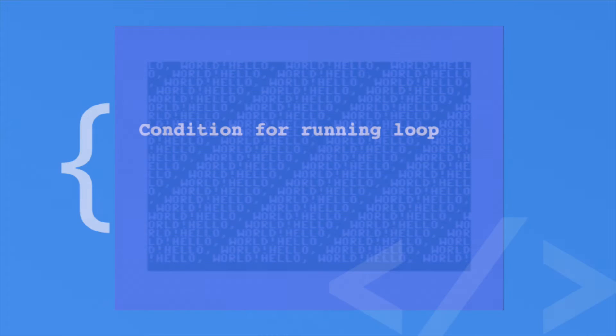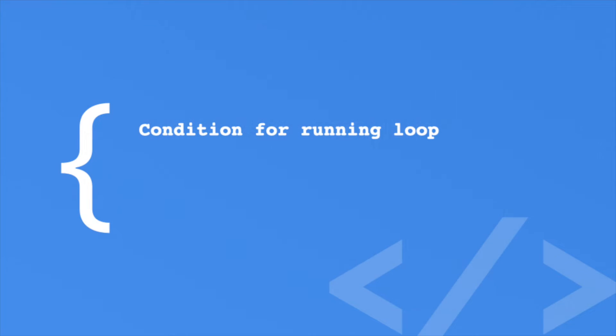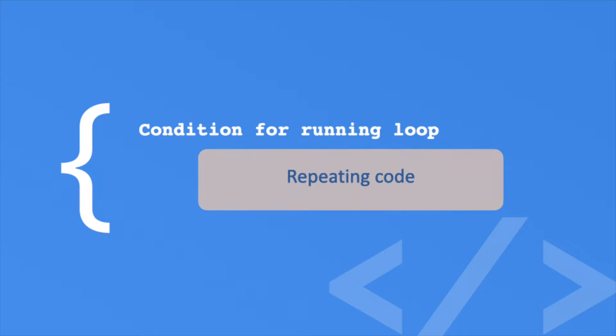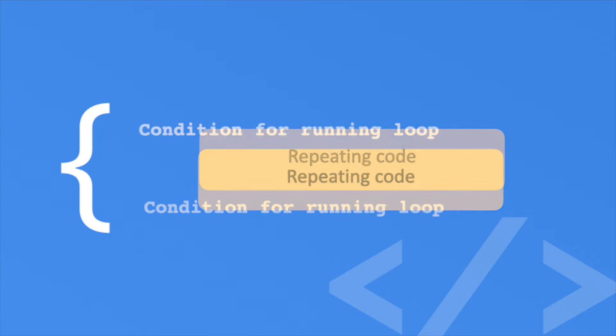In fact, C Sharp gives us a large number of loops that I'll demonstrate in this episode. Loops all have a similar construct. They provide a condition for the loop. Once you have a condition, then you have some code you want to repeat while the condition is true. Mind you, the condition may come before or after the code.